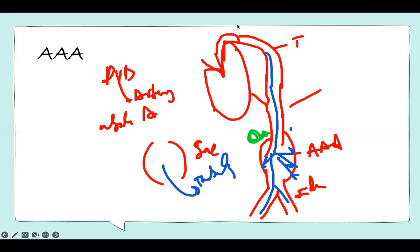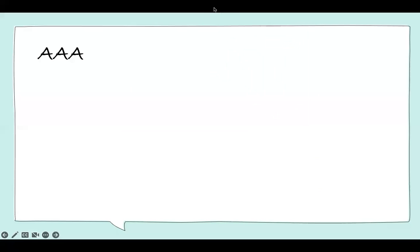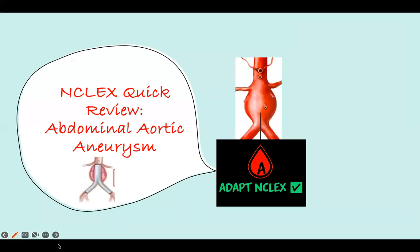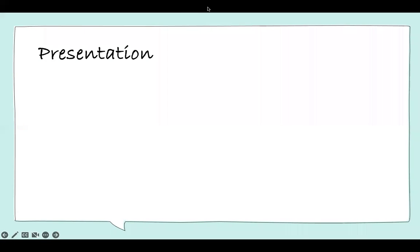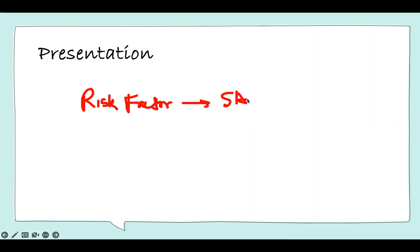The risk factors — basically it's a peripheral vascular disease, so you should expect the risk factors to be any peripheral vascular disease risk factors. Whenever you hear risk factors, think about SATA questions. Risk factors — who can get an aneurysm? It's like any other peripheral vascular disease. Therefore: hypertension number one, and all the conditions that give you peripheral artery disease.